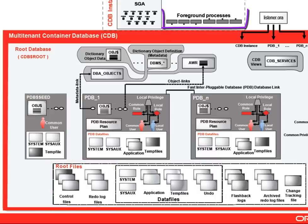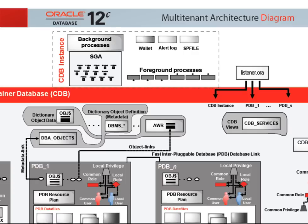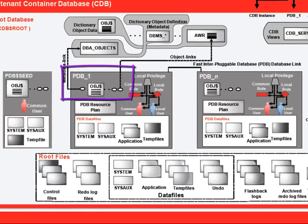Each PDB will have its own set of foreground processes representing sessions connecting to each PDB. Another structure shared among PDBs is the SGA. For example, the buffer cache now contains a new reference for each block corresponding to the PDB ID that block refers to. The same is true with child cursors. At the logical level, a PDB has a dictionary like any Oracle database. However, instead of redefining all the data dictionary objects, the idea is to create pointers to objects that are created and defined in the root dictionary, to avoid duplication as much as possible.